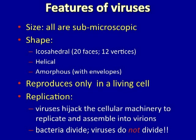Viruses may be icosahedral, helical, or amorphous in shape when viewed in an electron microscope. Viruses only reproduce in living cells, and they don't replicate by dividing inside living cells as bacteria do, but rather hijack the machinery of the cell to replicate themselves. They replicate their nucleic acids and their proteins, and then these factors assemble themselves into virions. Viruses do not divide.